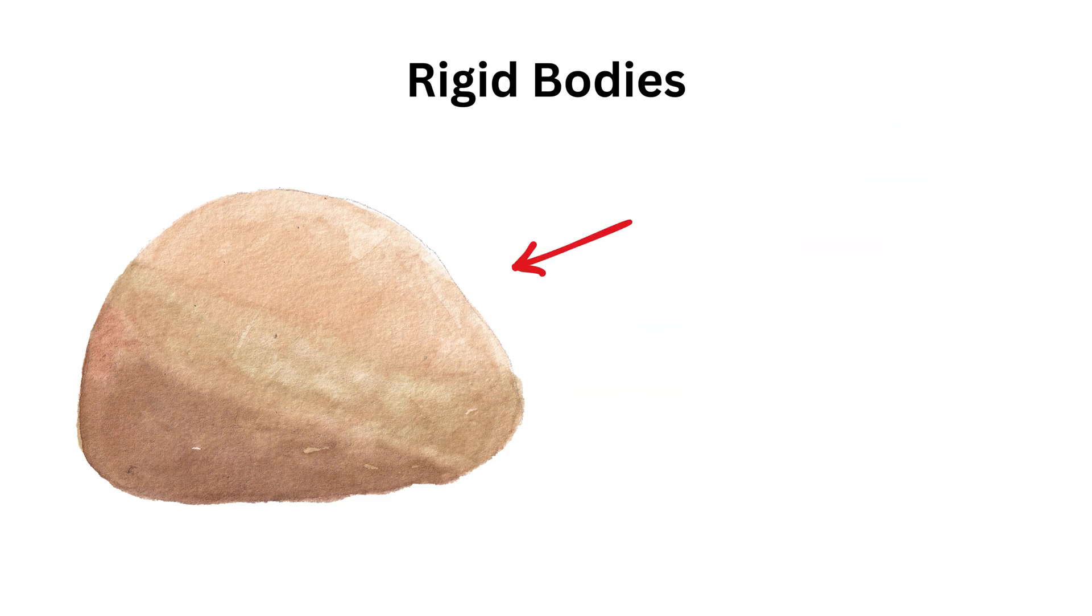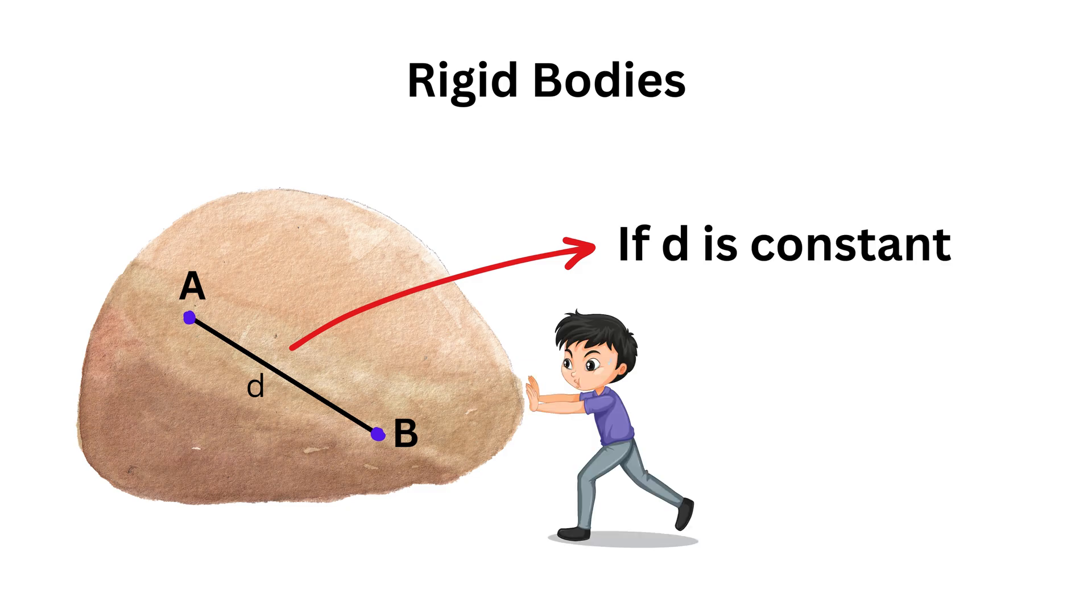Assume we have a body like this. Suppose we have two internal points, A and B, on this body like this, and the distance between these two points is D. Then, if the distance between any two internal points in this body remains constant, regardless of any external forces acting on it, then this body is a rigid body. That means point A and point B stay the same distance D apart.